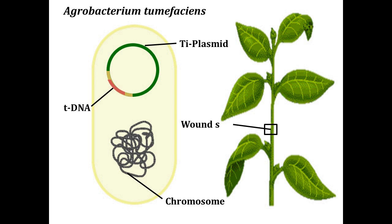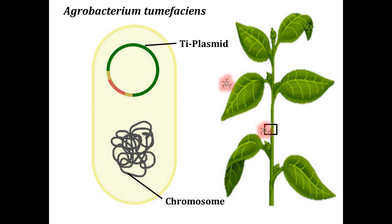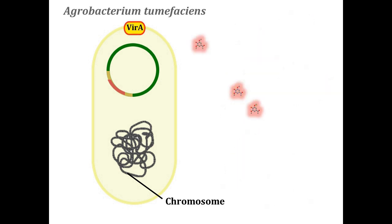The agrobacterium, which is present in soil, infects the plant at a site of injury. This wound site releases a phenolic compound, acetosyringone, by which agrobacterium detects the signaling for infection at the injured site.